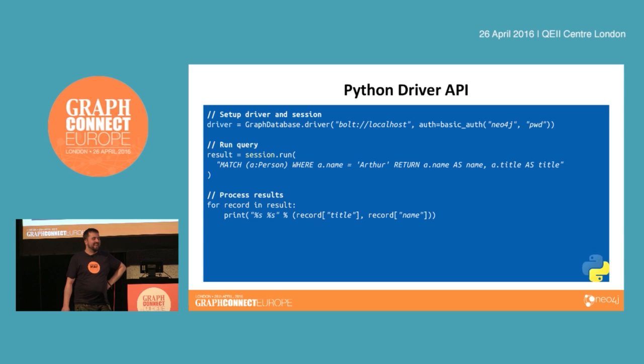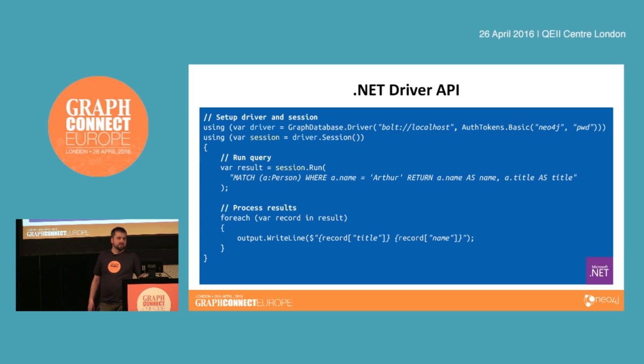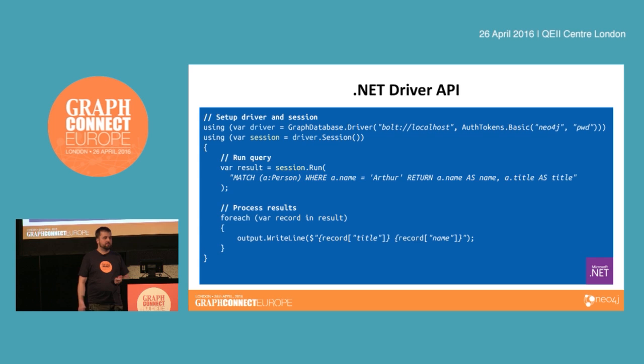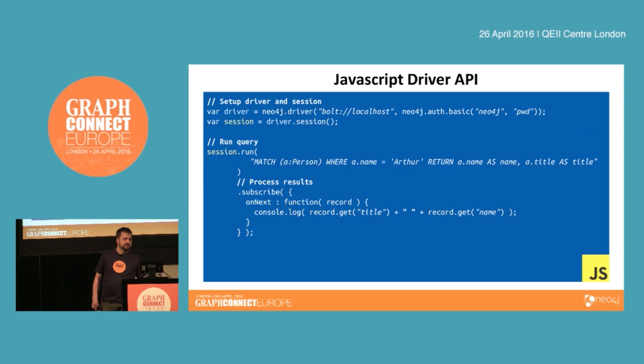The .NET driver follows a similar pattern. It's a bit different because .NET does the driver resources thing using the `using` keyword, but it is again the same pattern: get a driver, create a session, run a query, consume the results. The JavaScript driver also allows you to do the same pattern, but because JavaScript is inherently asynchronous in web browsers and Node.js, it also gives you an asynchronous API for consuming result records so you don't end up in a blocking situation.